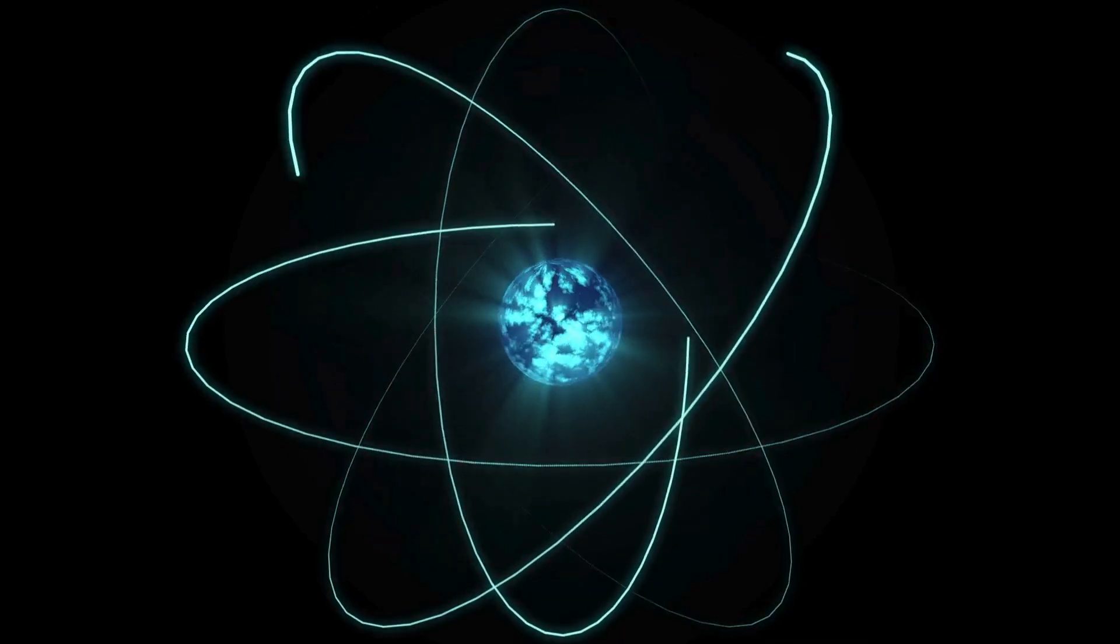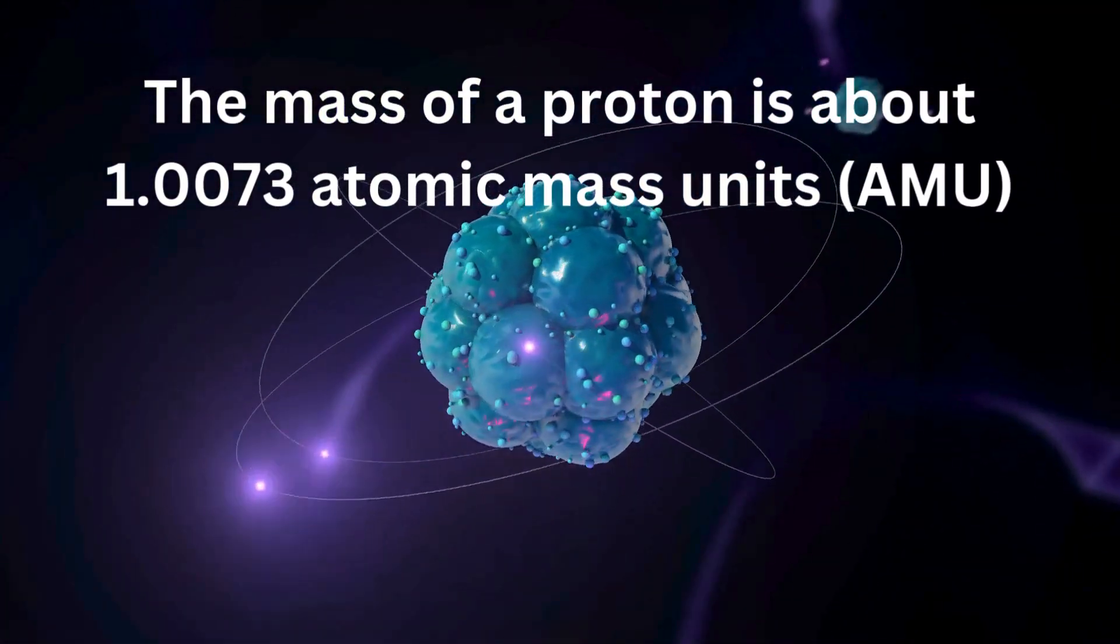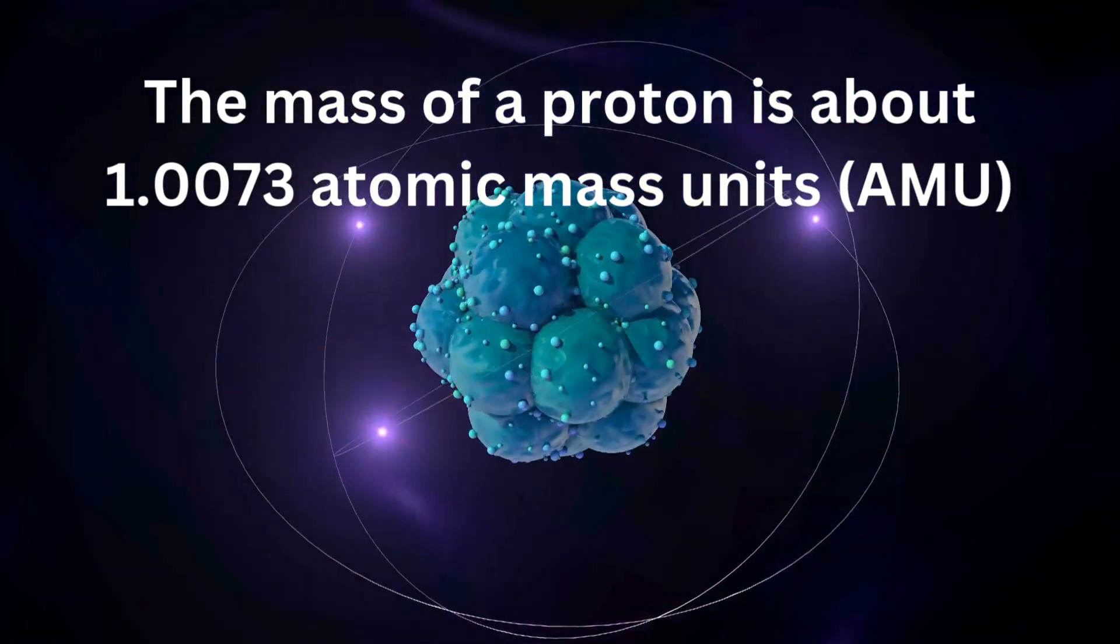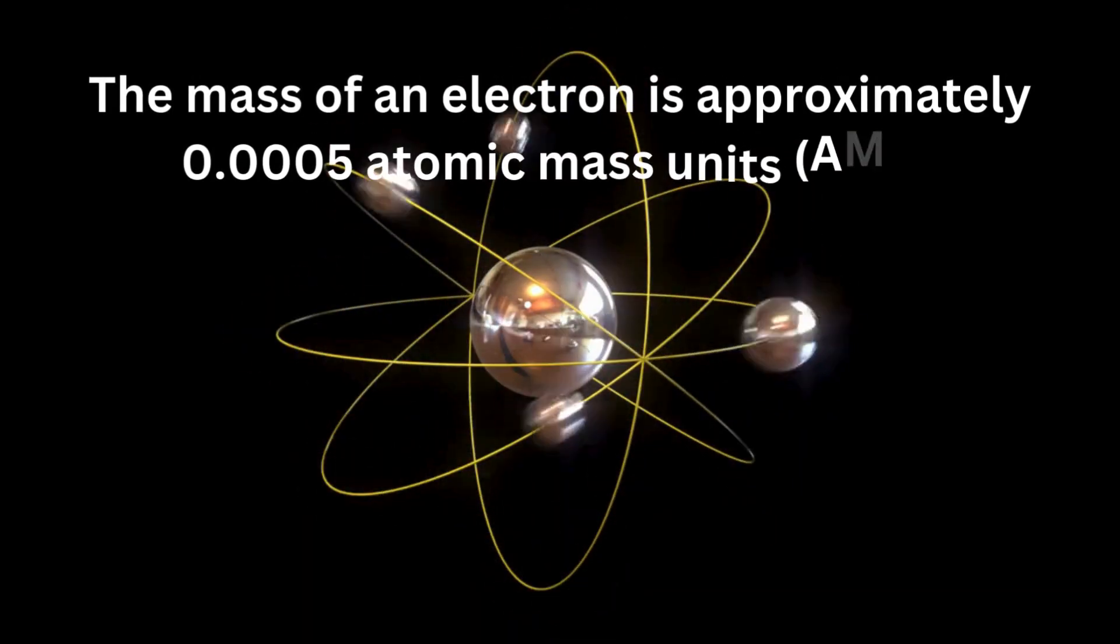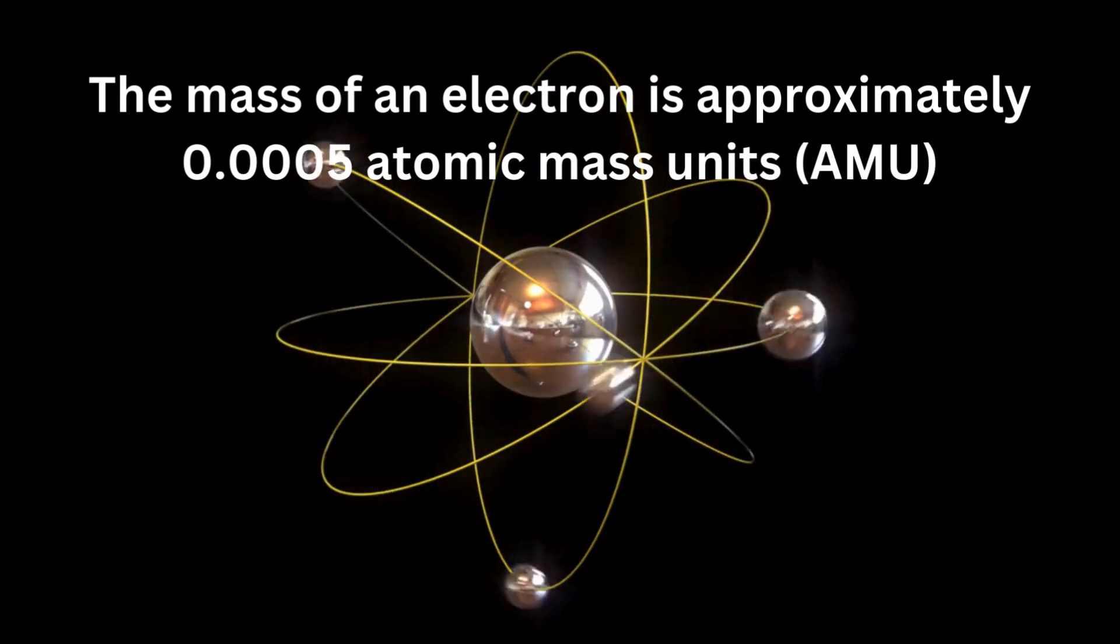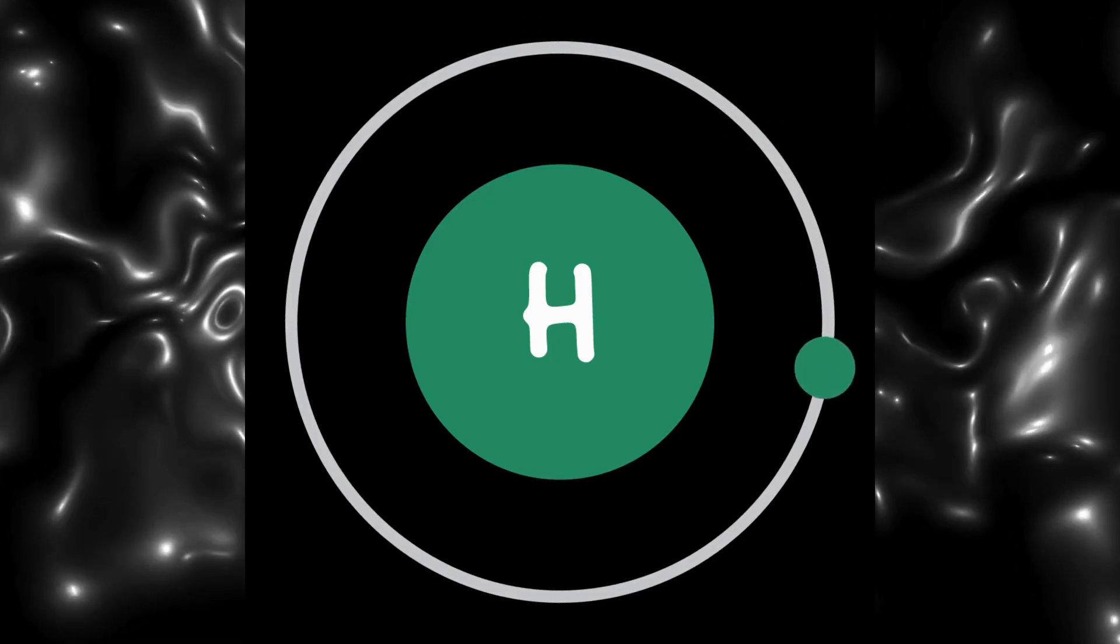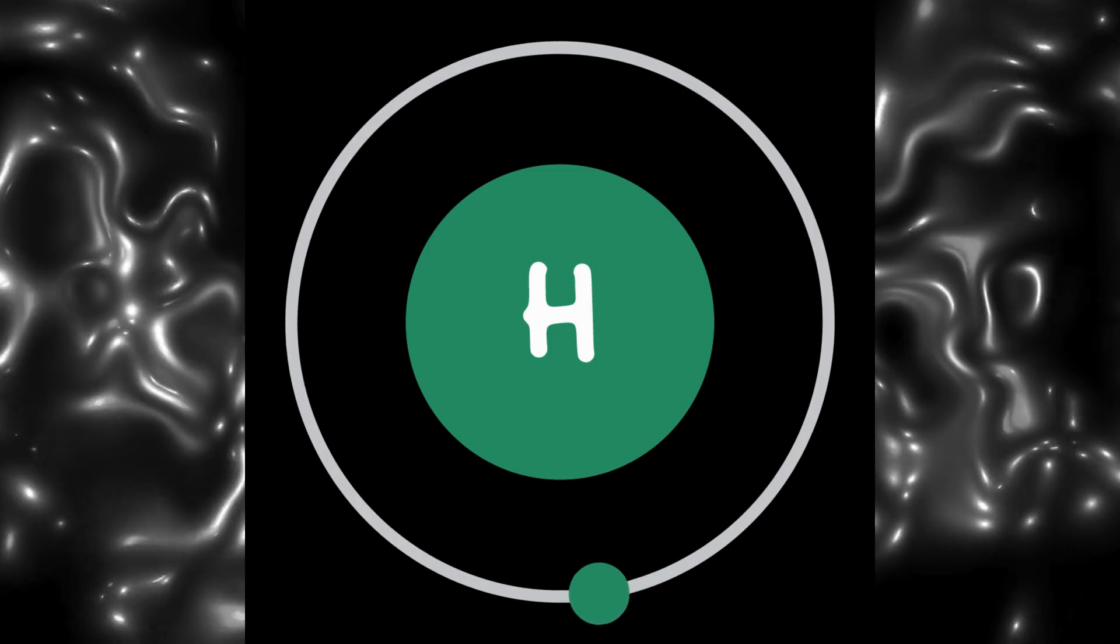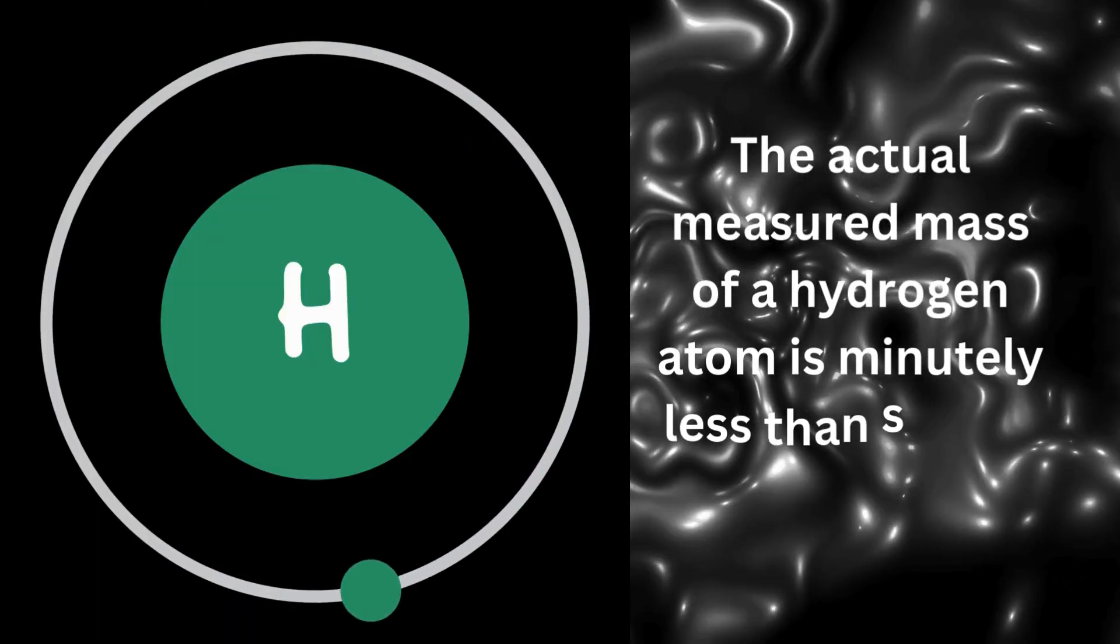Now, let's break that down. The mass of a proton is about 1.0073 atomic mass units, and the mass of an electron is approximately 0.0005 atomic mass units. If we add these together, we should get a total mass of about 1.0078 atomic mass units for hydrogen atom. But here's where it gets interesting. The actual measured mass of a hydrogen atom is minutely less than sum of its parts.